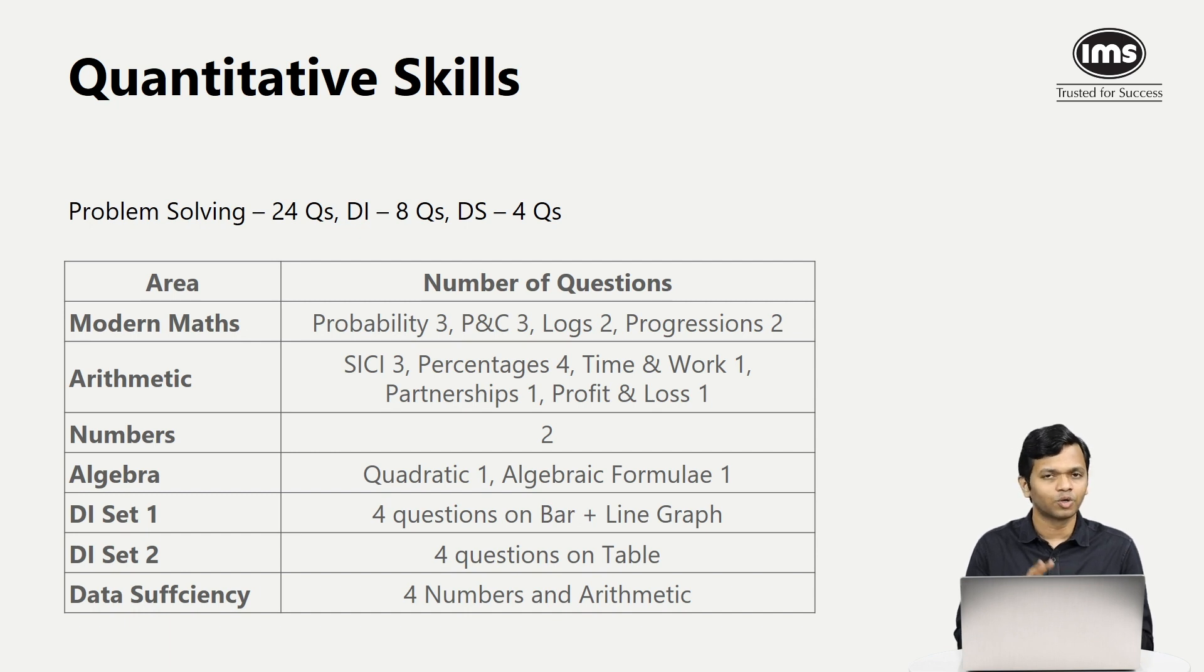Regarding DI sets, there were two DI sets. The paper in which I appeared had one set on bar plus line graph and one set on table. Of course, you can have different kinds of sets. Some may get sets with incomplete information, some may get a set on Venn diagram and so on. Regarding data sufficiency, it was a mixed bag with four questions based on numbers and arithmetic.